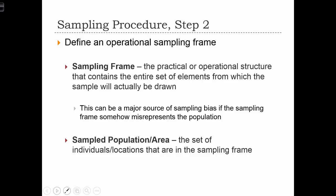Based on what does appear in the sampling frame, we can define the sampled population. This is just the set of individuals or locations, if we're doing a spatial survey, that are in the sampling frame. Hopefully those individuals in the sampling frame fully correspond with the set of individuals that are in the population.